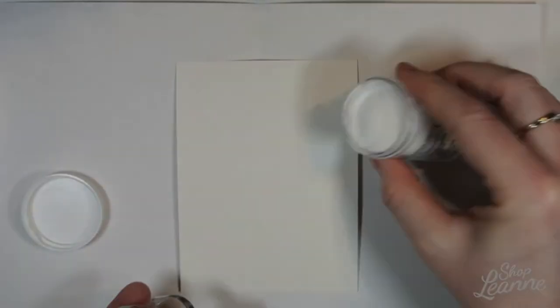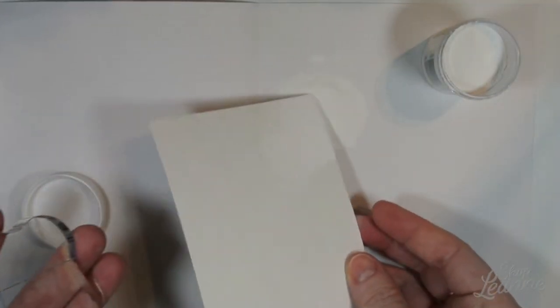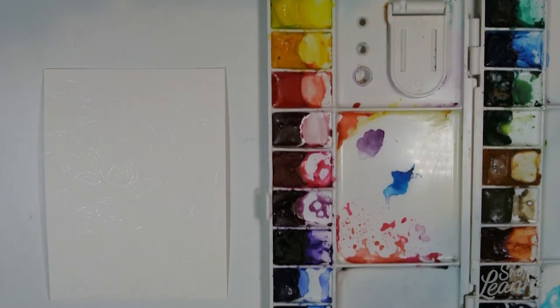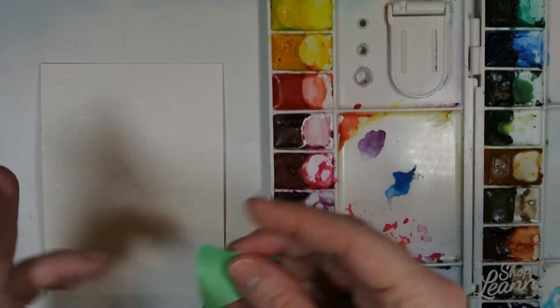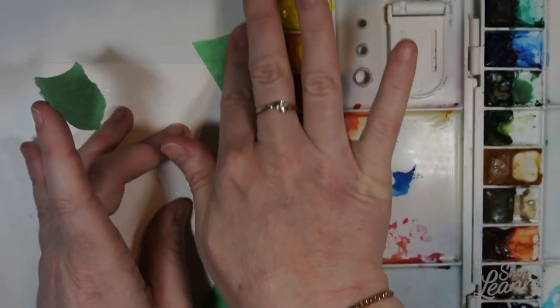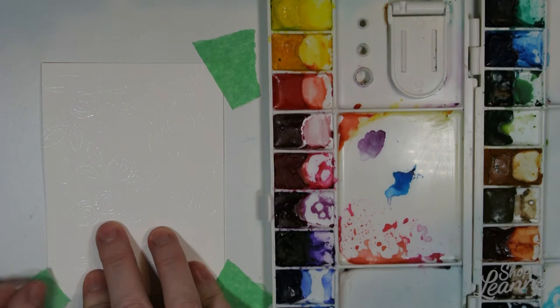When you work in clusters you want to work in odd numbers. That's just a design thing. The balance looks better with odd numbers than even. So I have everything embossed and I'm going to tape down my watercolor paper for watercoloring. Normally I do all the edges but I have some flowers and petals bleeding off the edge so I don't want to block those with the tape.